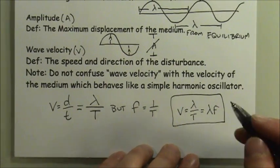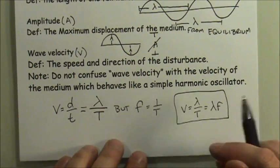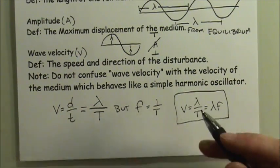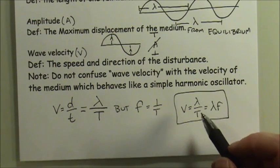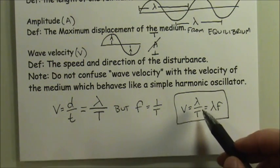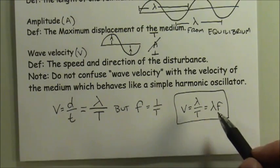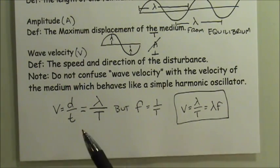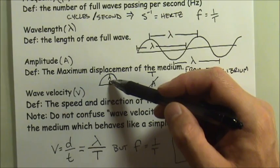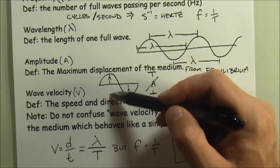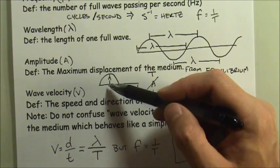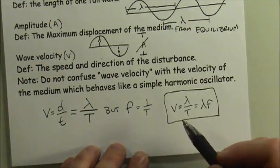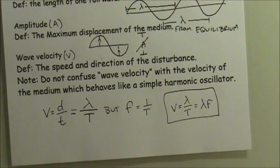This is the wave equation we can use for solving problems involving wave velocity based on the properties of the wave - the wavelength, period, or frequency. We won't use amplitude for wave velocity; amplitude helps with the velocity of the medium in simple harmonic motion, but not for the velocity of the wave itself.